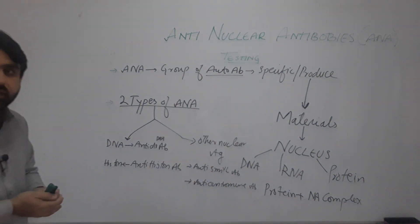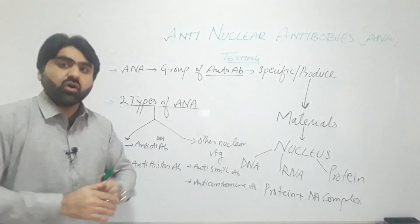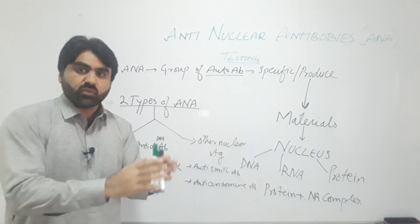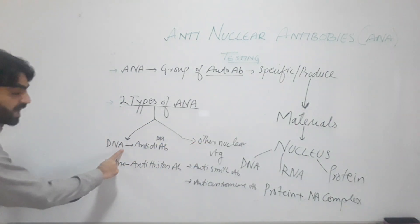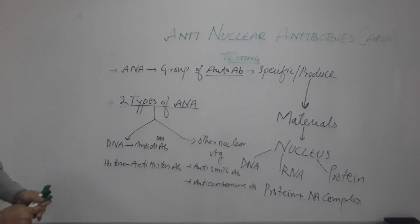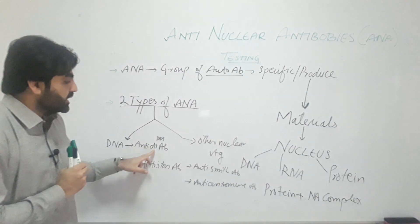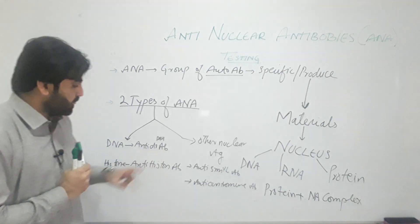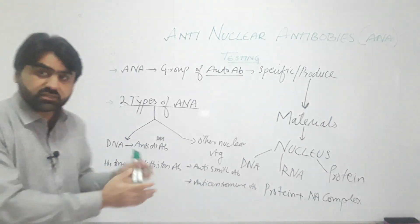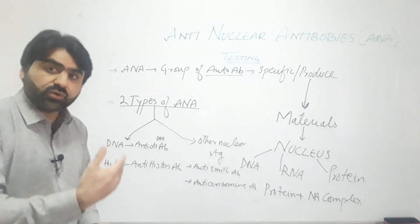How many types of anti-nuclear antibodies are there? There are two types, or you can say all anti-nuclear antibodies can be divided into two groups. The first group includes those produced against DNA or histone protein. The most common anti-nuclear antibody produced against DNA is anti-double-stranded DNA antibody, and against histone it is anti-histone antibody.